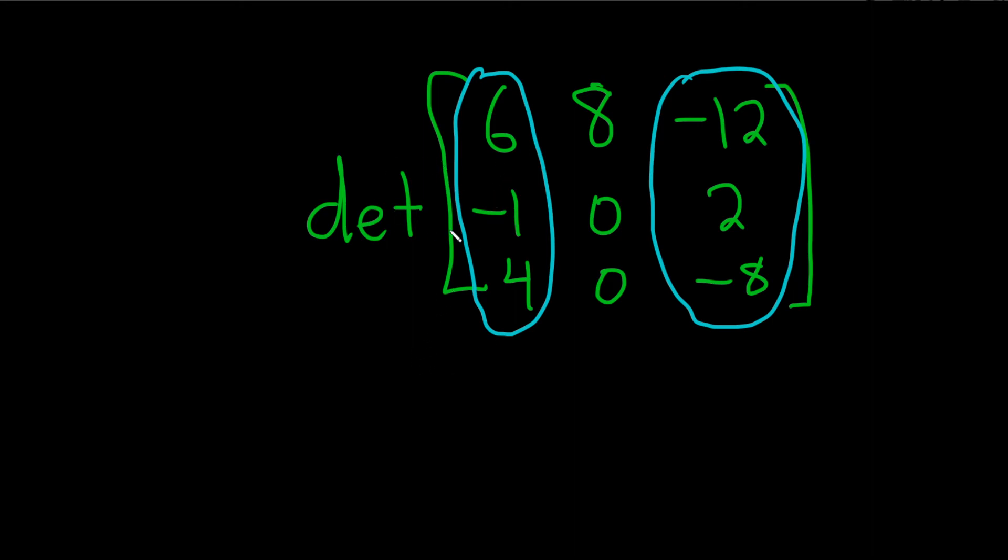So let's think about it. What number can we multiply the first column by to get the second column? Negative 2. Now let's check it.